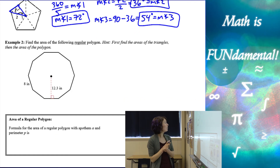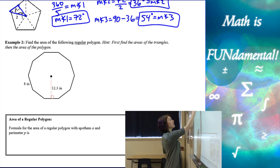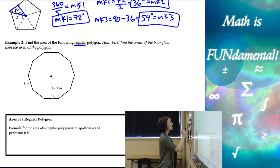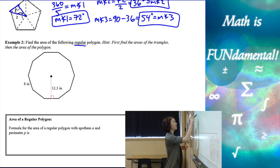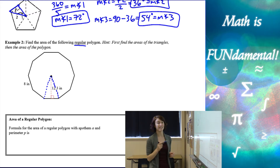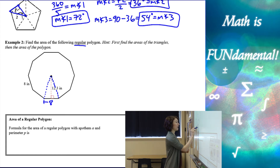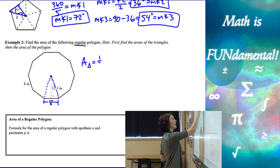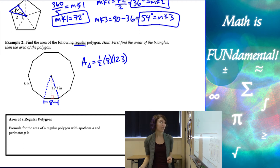Let's look at our first example. We have a regular polygon — it tells us in the problem that it's regular, so I can assume all sides are eight inches, and I want to find the area. This one's a little simpler because they give us the side length and they give us the apothem. If we draw little triangles, you can think of the apothem as the height of those triangles. So if this is eight inches and I have the height, I can find the area of one triangle using one half base times height.